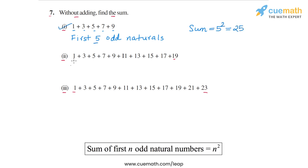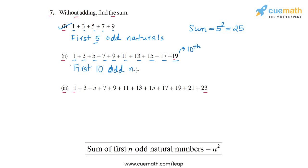In part 2, we have the odd numbers from 1 to 19. How many numbers are these? We count: 1, 2, 3, 4, 5, 6, 7, 8, 9, 10. So 19 is the 10th odd natural number. This sum is basically the sum of the first 10 odd natural numbers, and therefore its sum will be n squared, which is 10 squared, or the sum will be equal to 100.